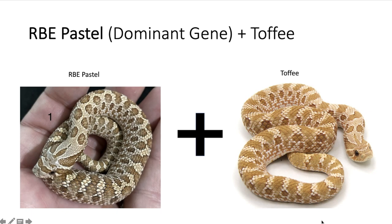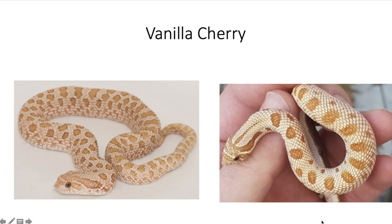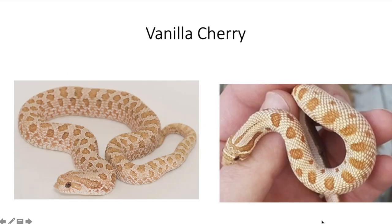The RBE pastel is basically a color enhancement — it makes the snake's pattern pop out more, makes it brighter, and usually snakes with this gene get more vibrant as they age. When you mix these two together you get what's called a vanilla cherry. I have the regular version as well as the conda version as examples, and you can really see how bright it gets with the conda — the RBE pastel really makes the pattern a lot lighter.